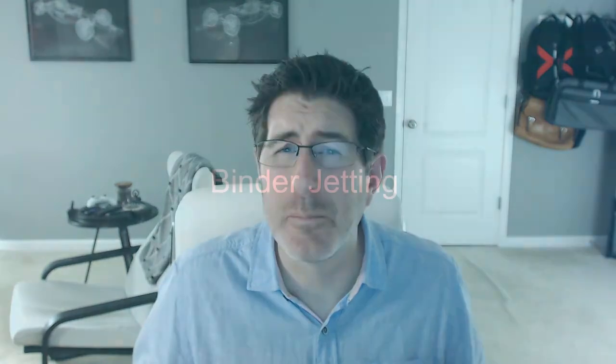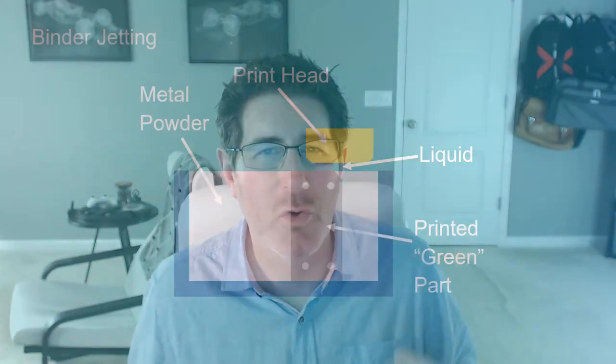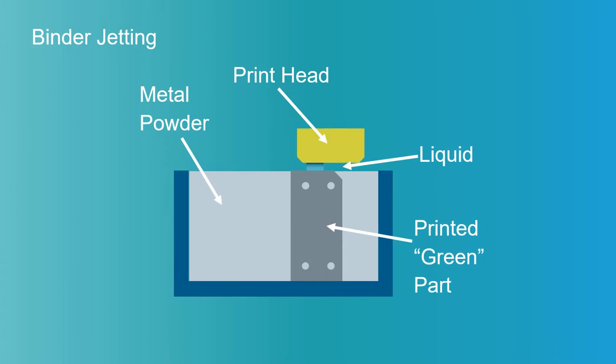Similar to plastic printing, binder jetting can be used to print metal parts. In this case, metal powder is used as the base material, but instead of fusing with a laser, a liquid binder is squirted in very small droplets into the powder by a printhead moving back and forth across the powder bed. The main difference from plastics is that metal parts require a heat treatment post-process to sinter the metal part into a solid part. This post-process heat treatment also causes a certain amount of shrinkage, which must be compensated for during design or print preparation. Binder jetting, whether in plastic or metal, does not require support structures — which is one advantage of this technology.